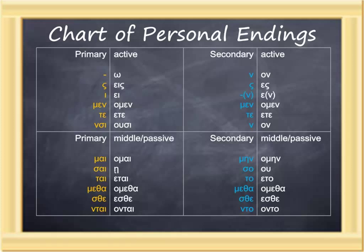The second column of white letters of endings shows those endings with the connecting vowel, omicron or epsilon. Please note the second one in the primary middle passives is a contraction of epsilon plus sigma alpha iota, which contracts down to eta with an iota subscript.